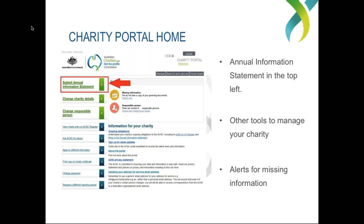In the middle of the portal homepage there are also alerts. If your charity is missing some information — for example, it doesn't have a governing document or there are responsible persons missing — it will alert you there and you can click on those alerts and fill in the required details.